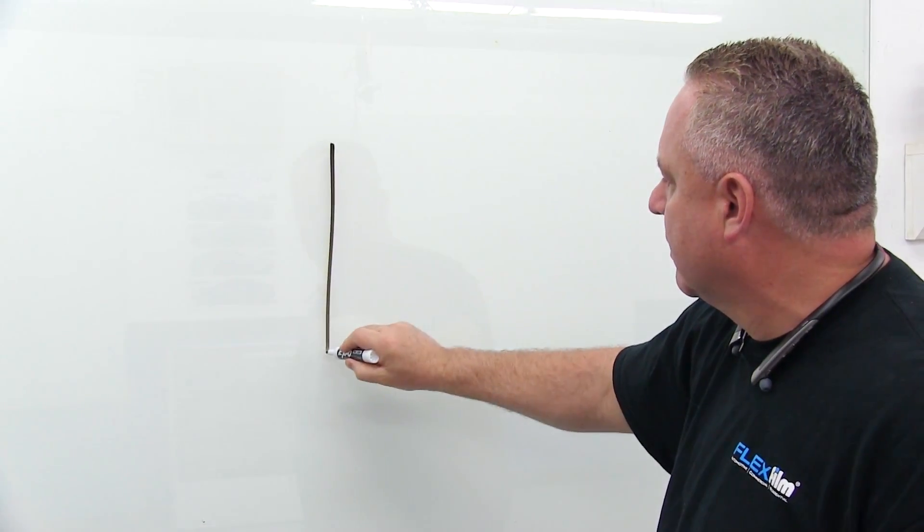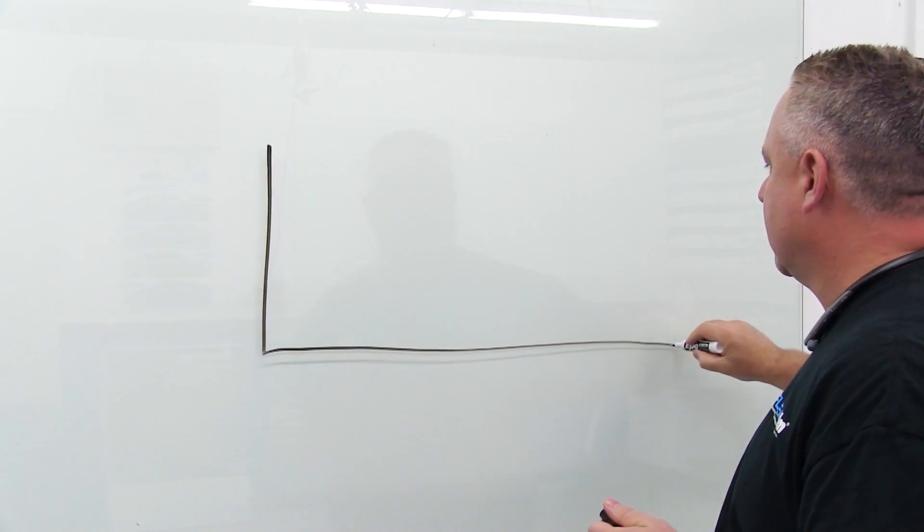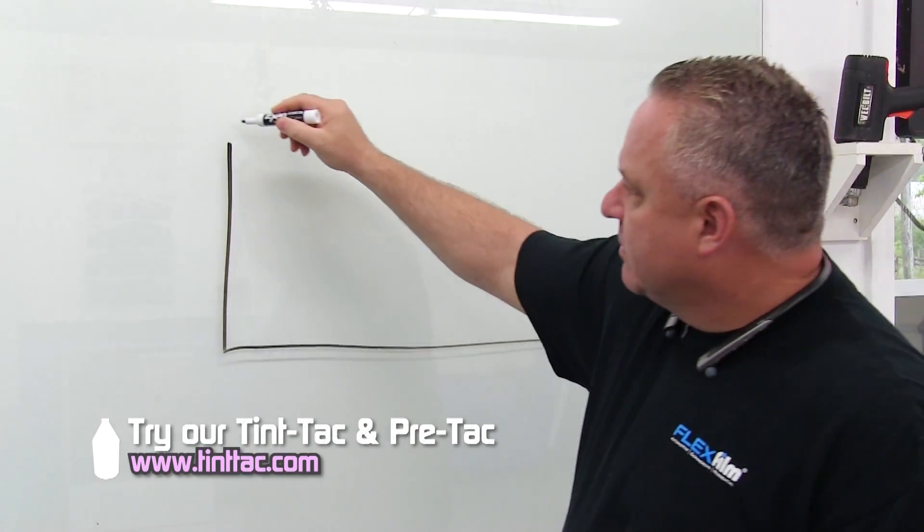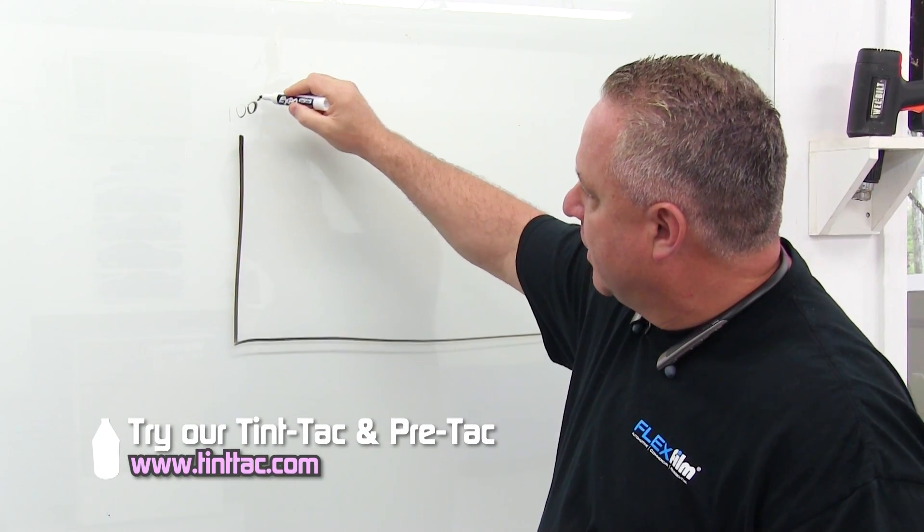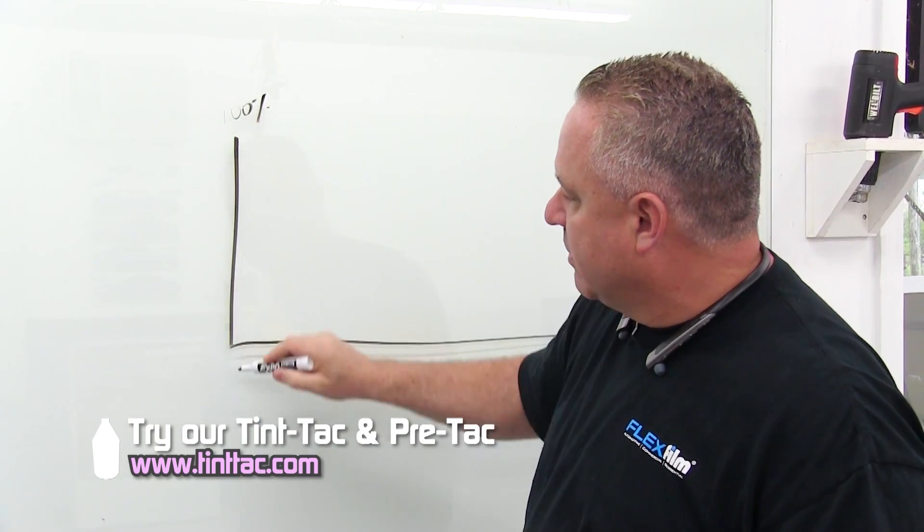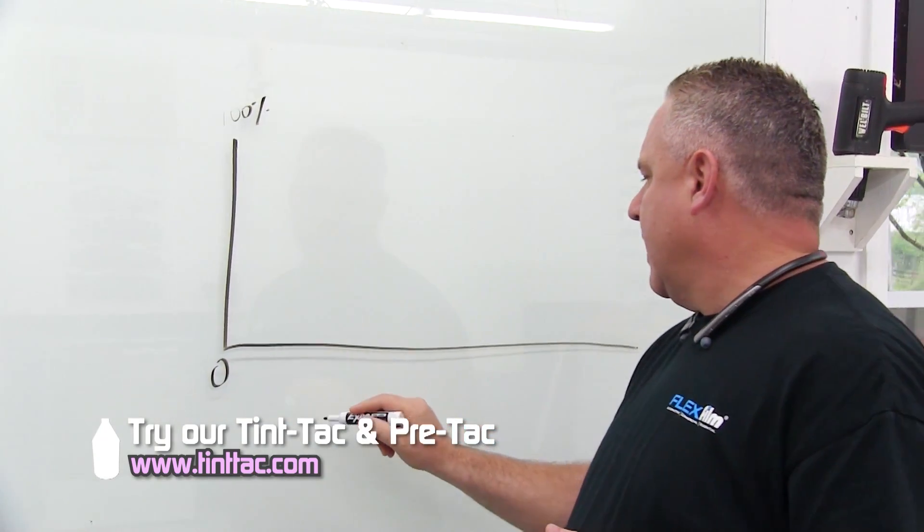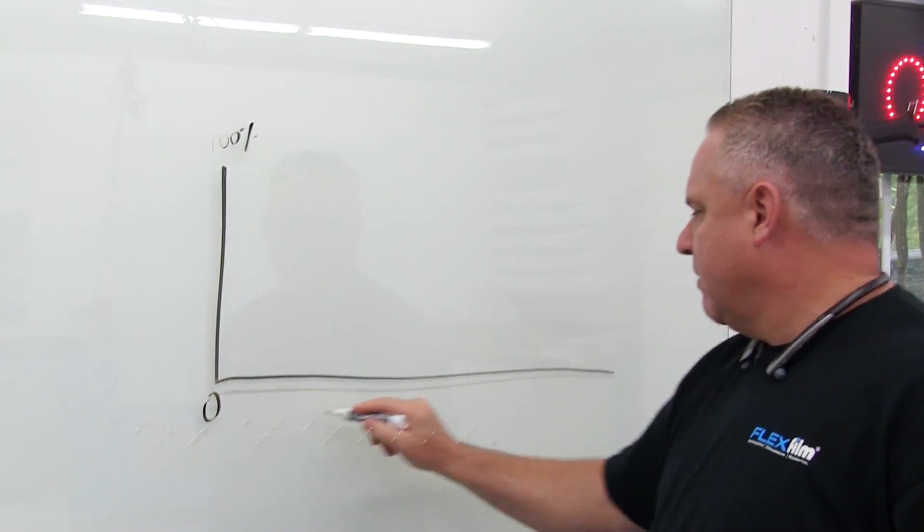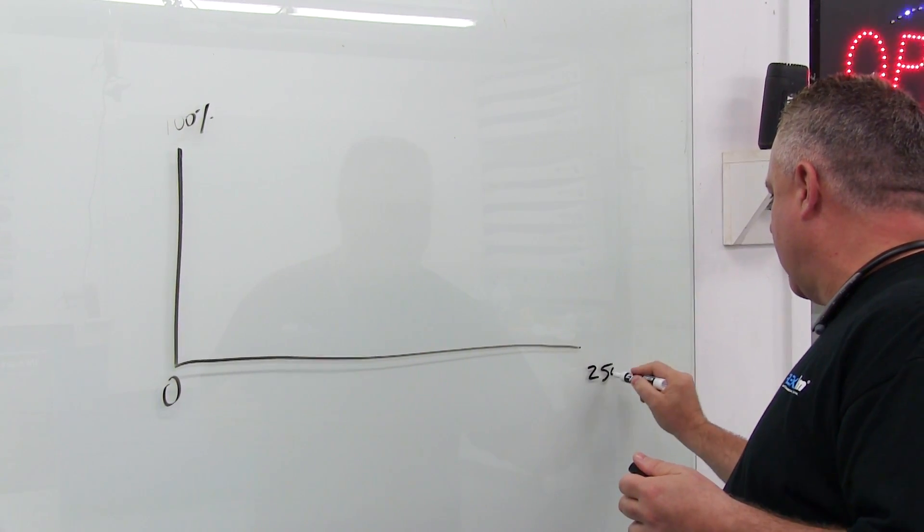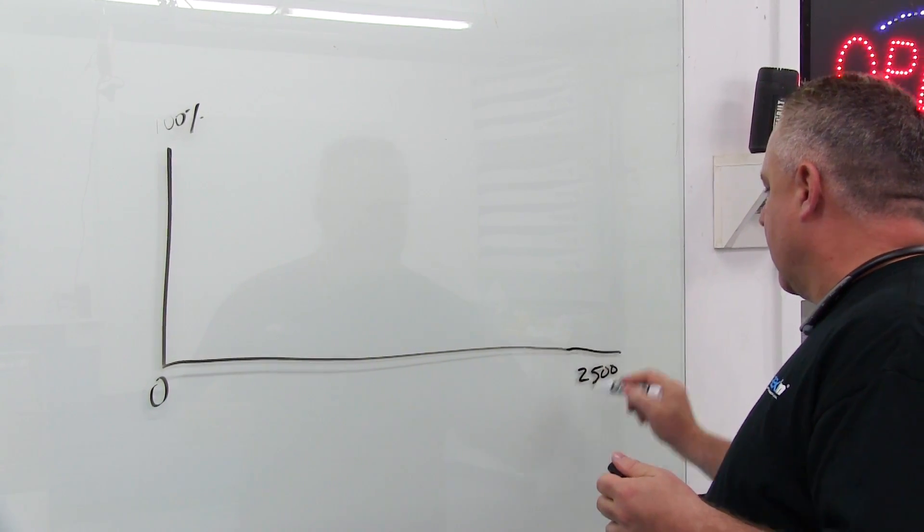But right here, it should look something like this. This vertical line is the percentage and it starts, this is 100 and this is zero. And this is also zero and it goes to about, let's say 2,500 for our sake.